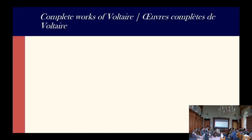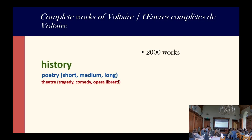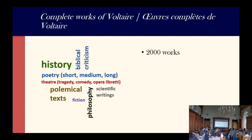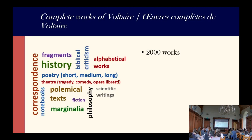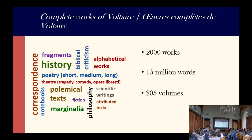The complete works includes roughly 2,000 works, including poetry, theatre, history, scientific writings, fiction, philosophy, biblical criticism, polemical texts, alphabetical works, correspondence, fragments, notebooks, marginalia, and other attributed texts. These all come to about 15 million words — that's just Voltaire, not our apparatus — in 205 volumes published between 1968 and 2022.